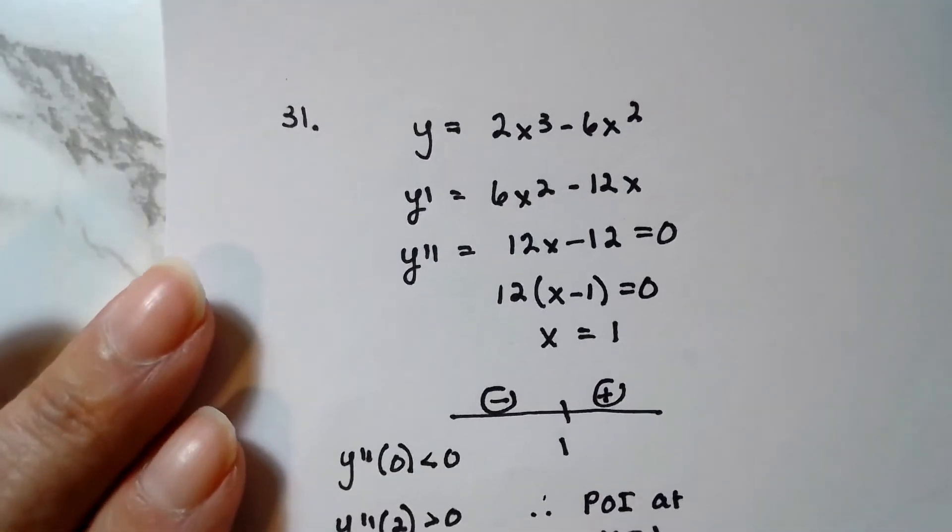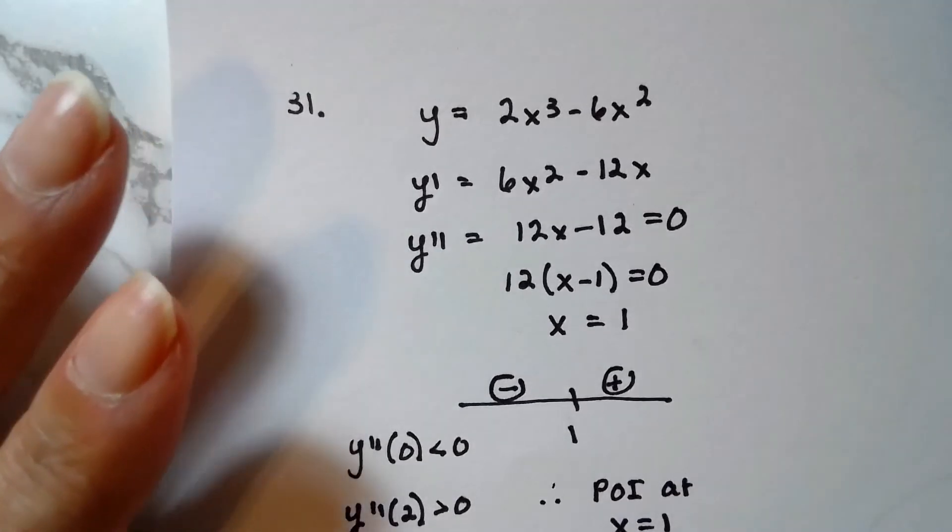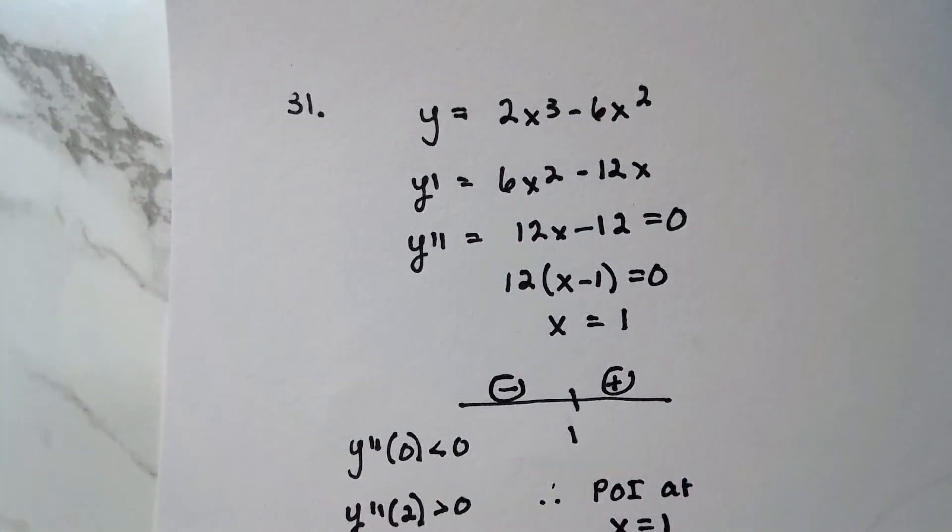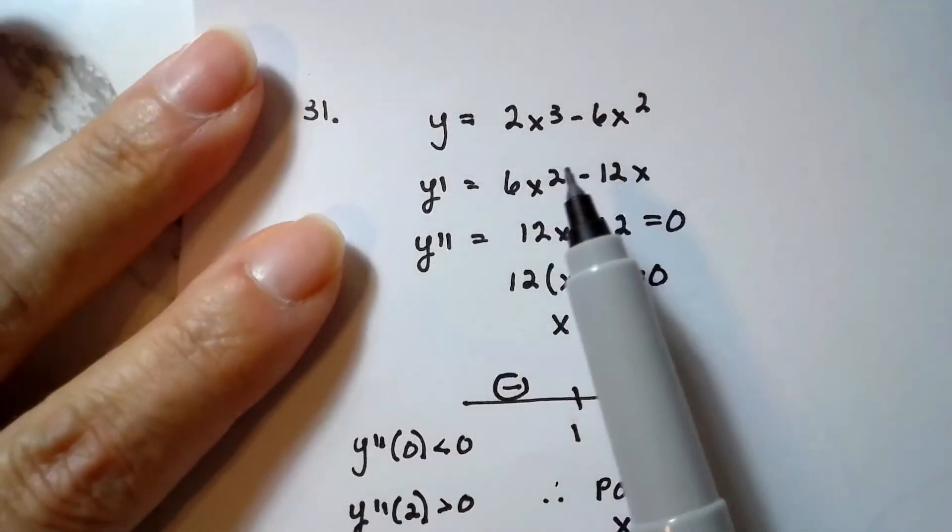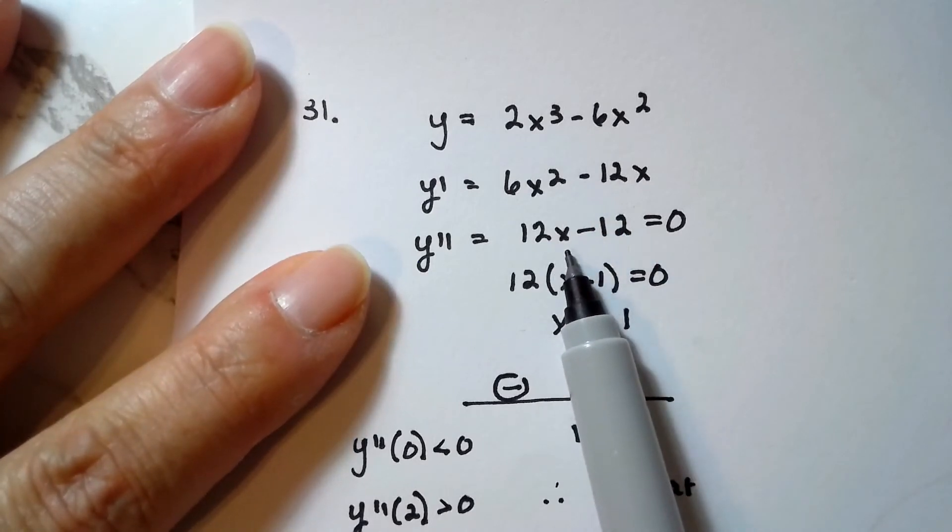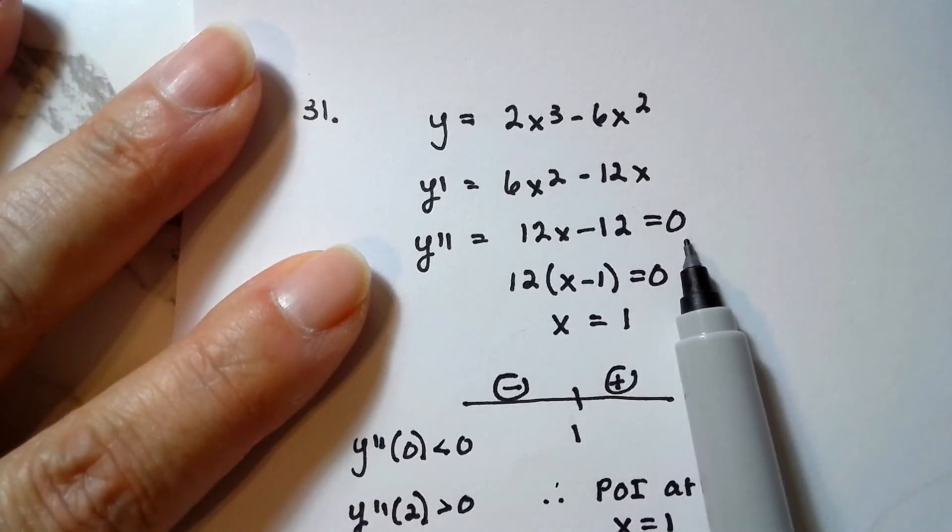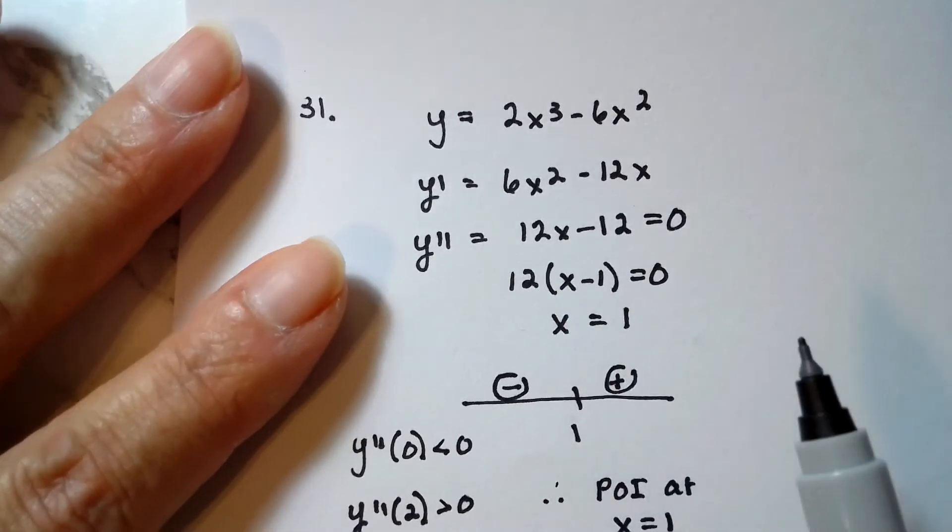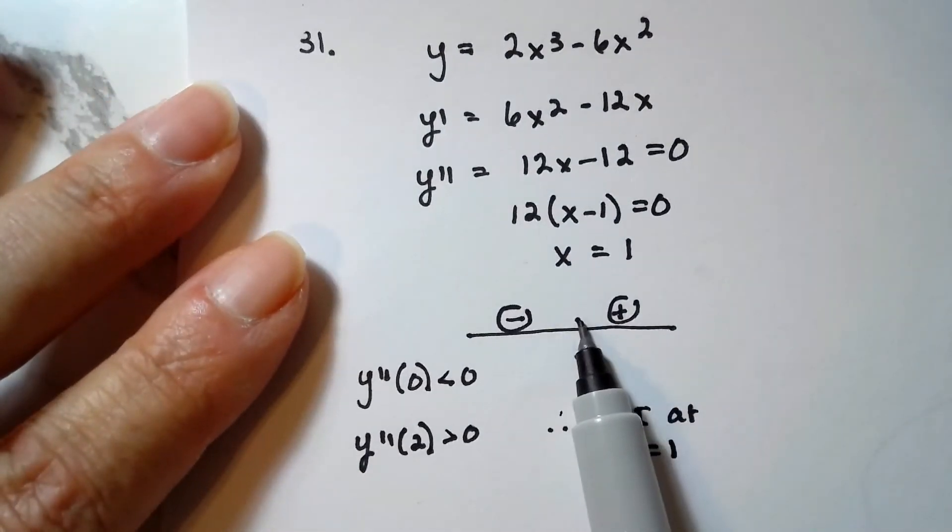And number 31, you're asked to find inflection points. So that means inflection points occur when the second derivative equals zero and change a sign about the critical numbers. So I took two derivatives. Here's the original function, first derivative, second derivative, set the second derivative equal to zero. I factored out a 12. So x is equal to one. I plotted it on a wiggle graph.